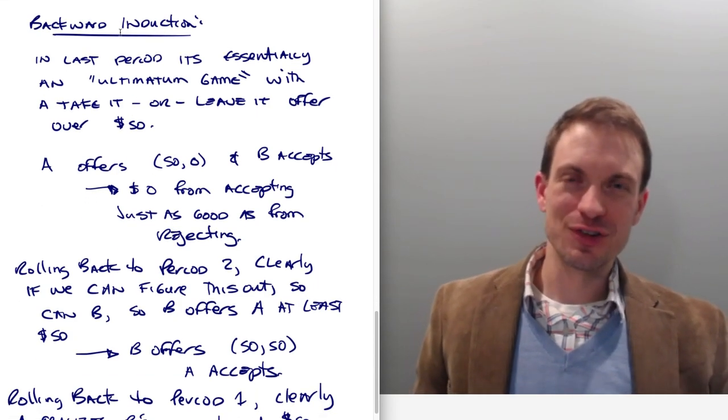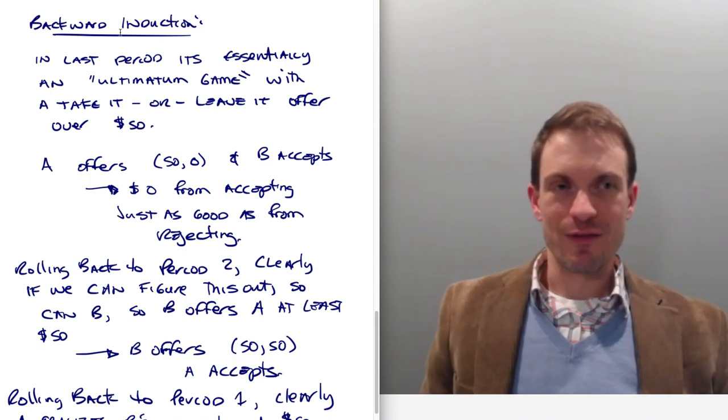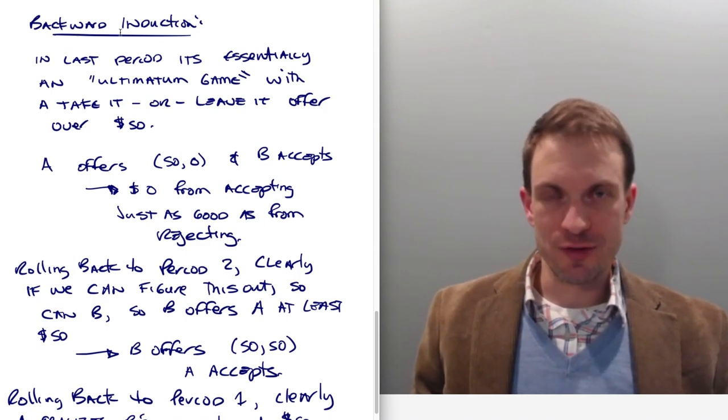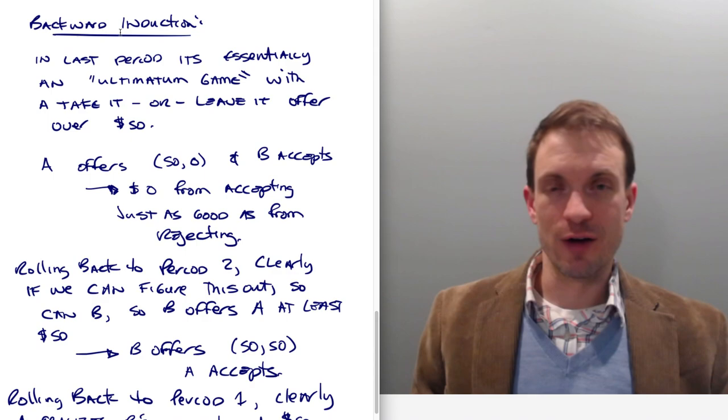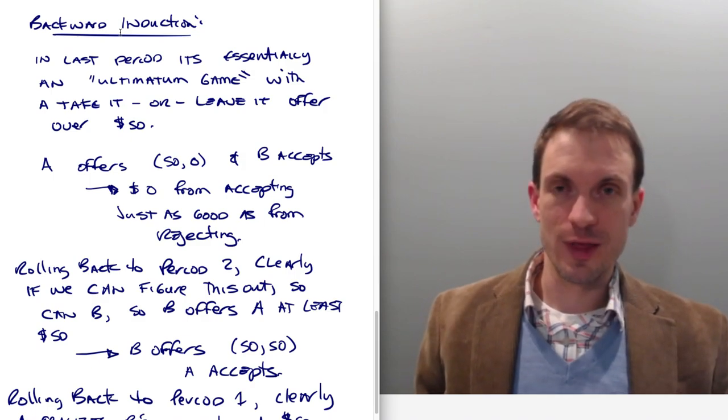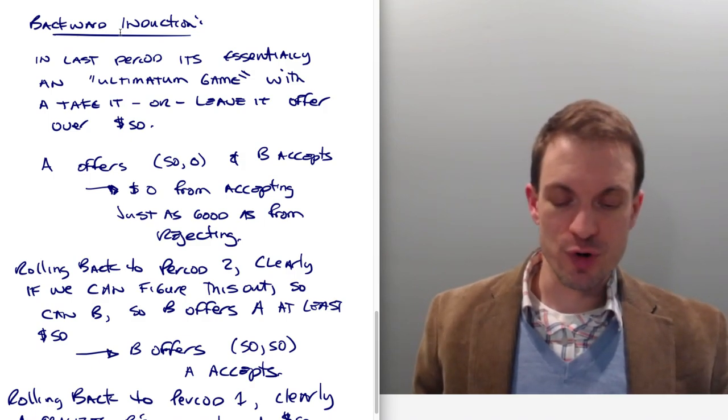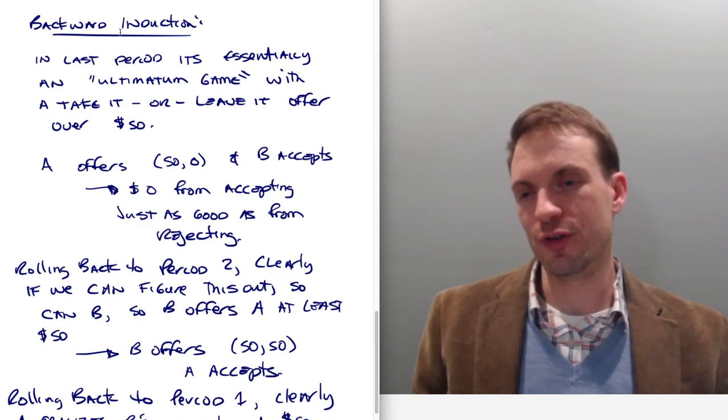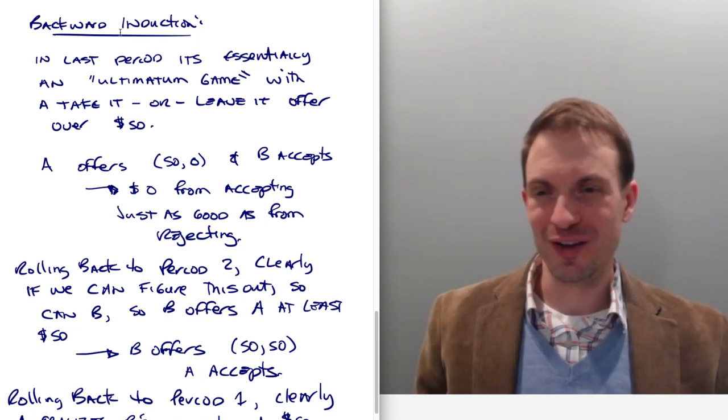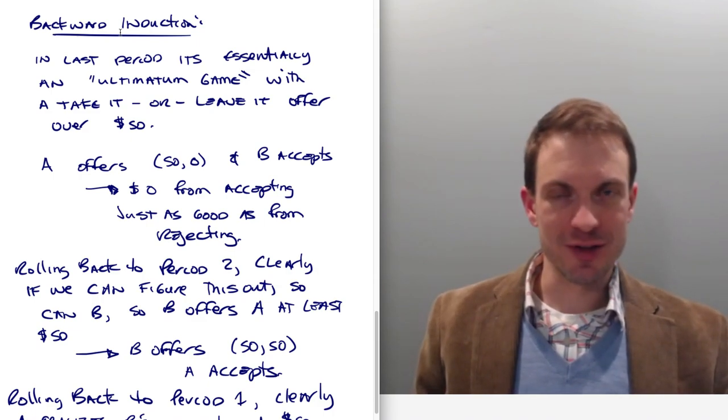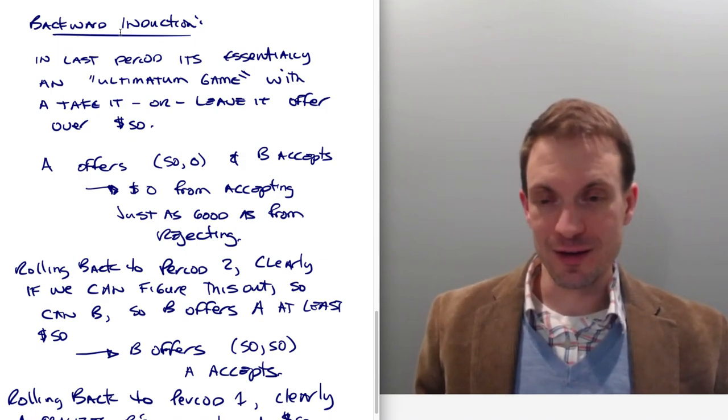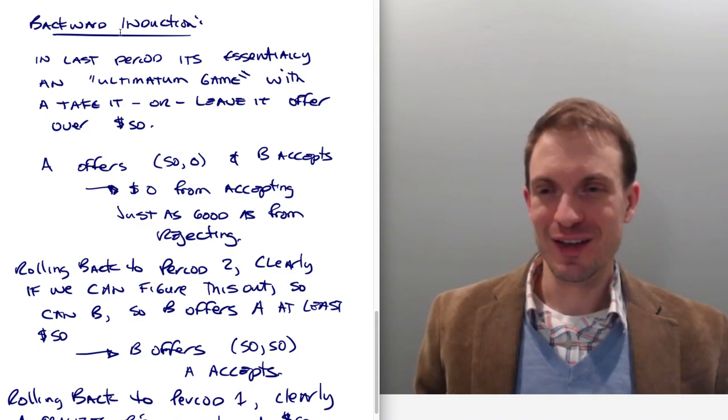So think about the backward induction solution here. In the last period, we essentially have an ultimatum game. So we have a take it or leave it offer. And under those circumstances, person B, who's responding to the last offer is going to be exactly indifferent between accepting that offer, accepting a zero as part of that deal, or getting a zero from rejecting. If that makes you uncomfortable, we could say, okay, A is going to give B just enough to sweeten the pie so that B is going to want to accept. So you could have some epsilon, some small positive amount, you could think of giving like a dollar or a penny. Theory would predict that that would be enough to be able to get B to accept.